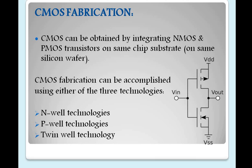Last class we have seen how we are going to prepare a NMOS transistor — the NMOS fabrication process. Now in today's class we are going to see how we are going to prepare a CMOS transistor. CMOS fabrication is very important. It is nothing but integrating both NMOS transistor as well as PMOS transistor — a combination of both on a single chip substrate. For CMOS fabrication there are 3 technologies: N-well technology, P-well technology, and Twin-Tub technology.